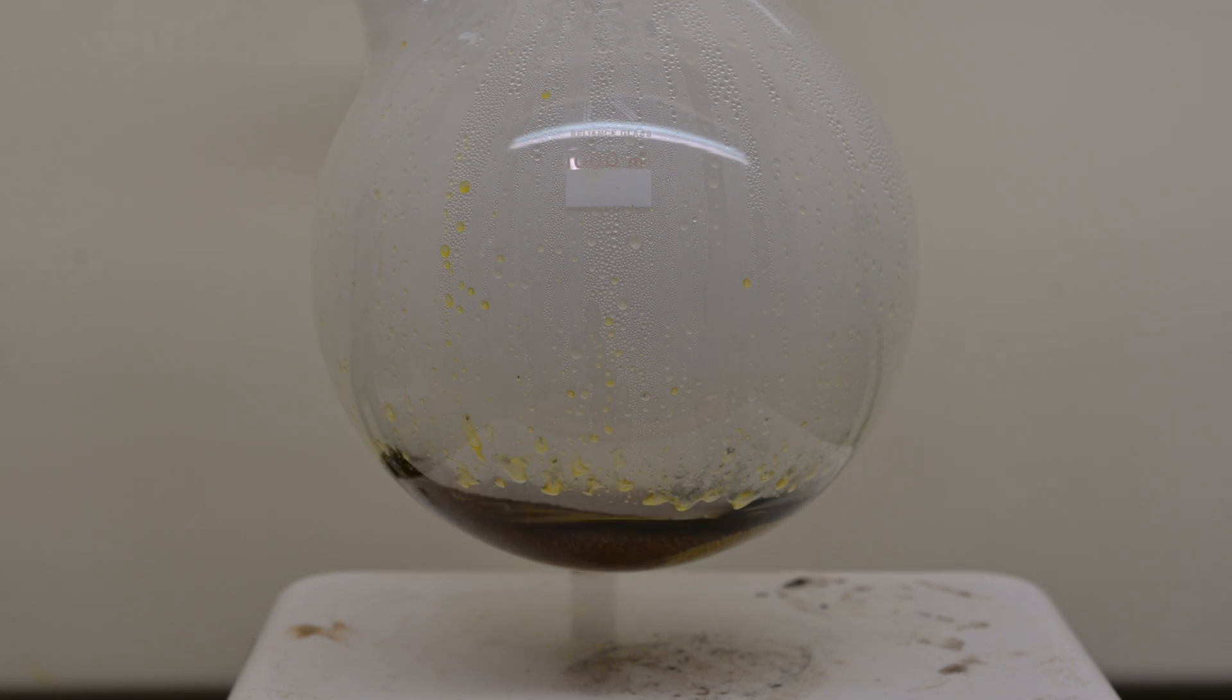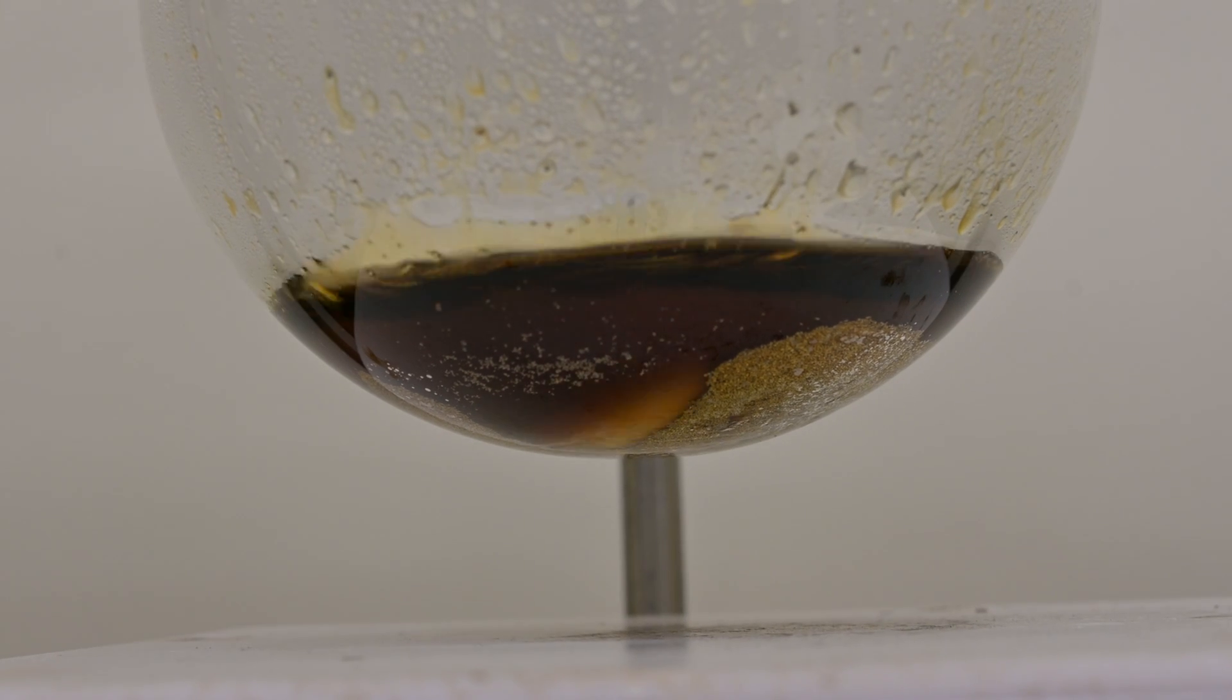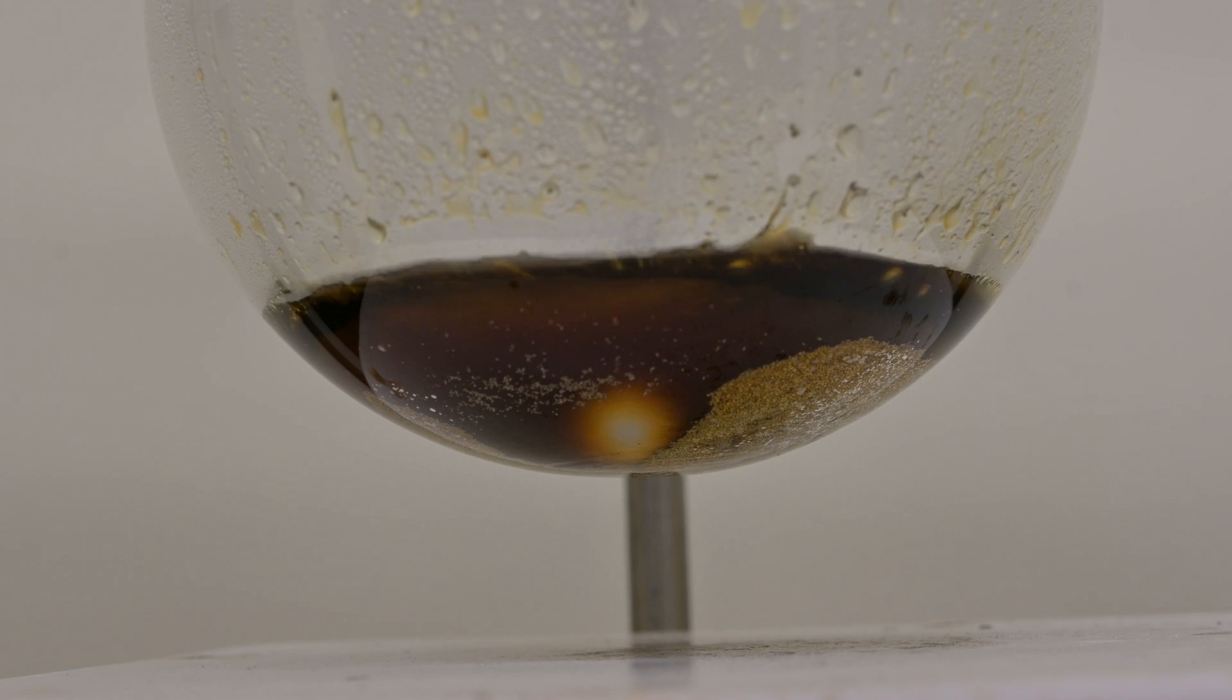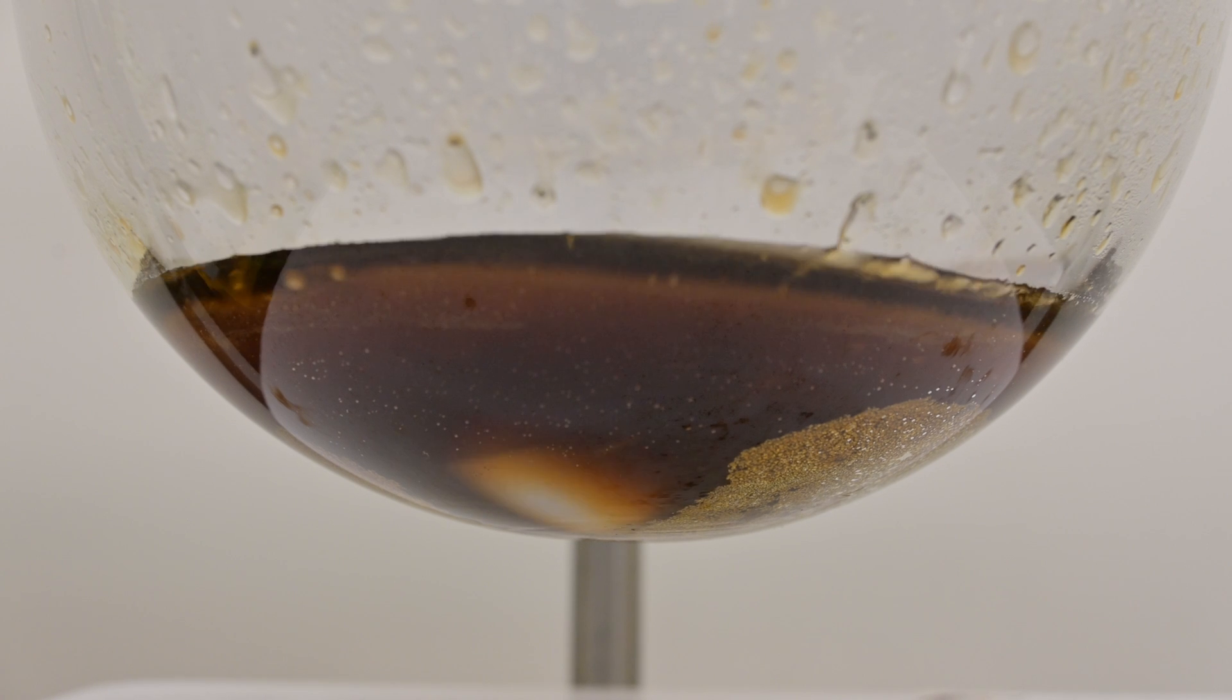If the reaction ever becomes too vigorous, place the flask into cold water to control the reaction without stopping it. Adding the acid slowly will keep a thermal runaway from occurring. We add the remaining half of acid in 20 cc portions with the same precautions as before.